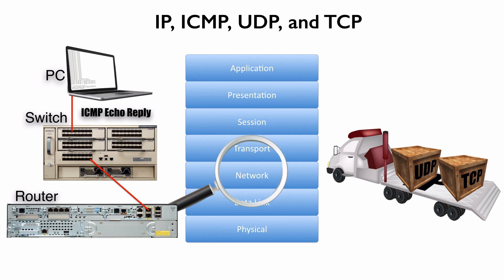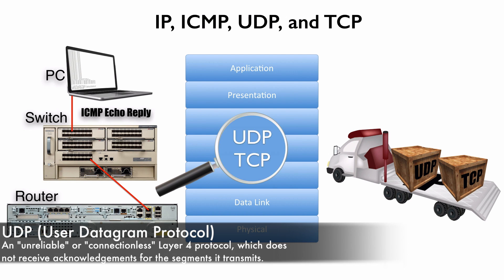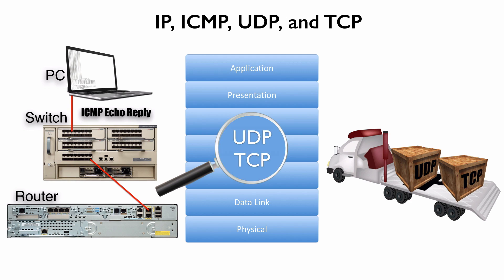Let's move up to layer 4, the transport layer. A couple of the major protocols at layer 4 are UDP, user datagram protocol, and TCP, transmission control protocol. One of the distinguishing characteristics of these protocols has to do with their reliability. UDP is not considered reliable — we send a UDP segment and hope it gets to its destination, but there is no guarantee and no acknowledgement coming back from the far side.